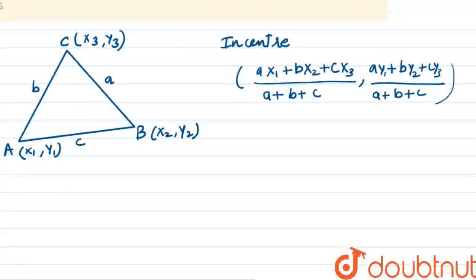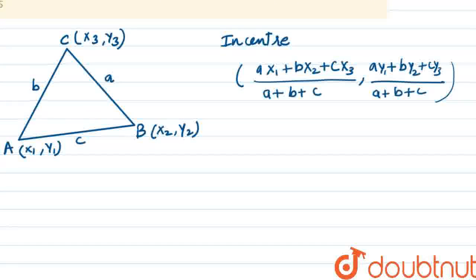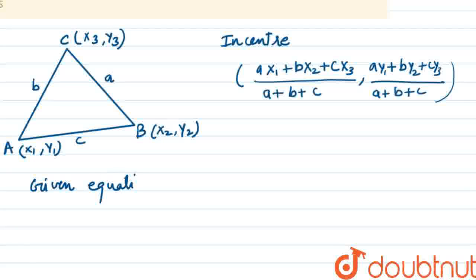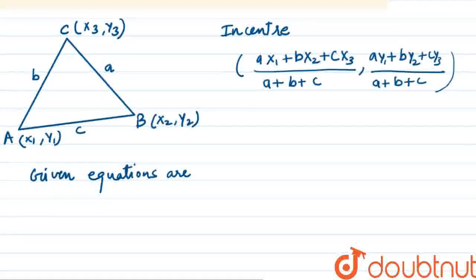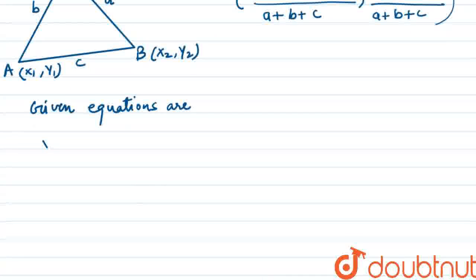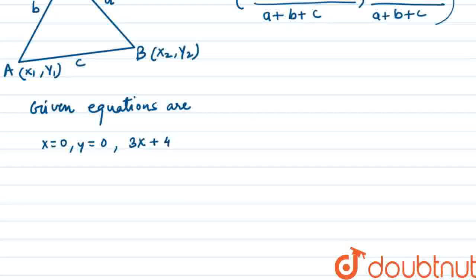So now let's see which lines are given to us. The given equations are x = 0, y = 0, and 3x + 4y = 12.